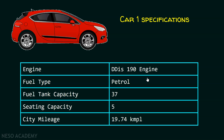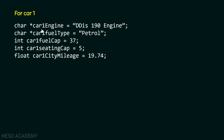One way is to create different variables for these different types. We can create a separate variable for each piece of data. For the engine, I can create a pointer to a character, since I'm assuming this is a string literal. Similarly for fuel type, I also need a pointer to a character. For fuel tank capacity, I need an integer variable, and for sitting capacity also an integer. But for city mileage, I need a float variable. So I have declared car1_engine, car1_fuel_type, car1_fuel_tank_cap, car1_sitting_cap, and car1_city_mileage to store all this information.